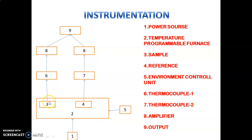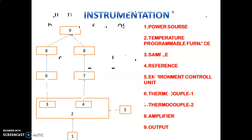We need to measure the temperature of both the sample and the reference simultaneously. That is the reason we require two thermocouples. Thermocouple one measures the temperature of the sample, and thermocouple two measures the temperature of the reference material. The difference in temperature between the sample and the reference is also measured. This data is provided to the amplifier, which amplifies the data and sends it to the output. The output produces a spectrum known as a differential thermogram.